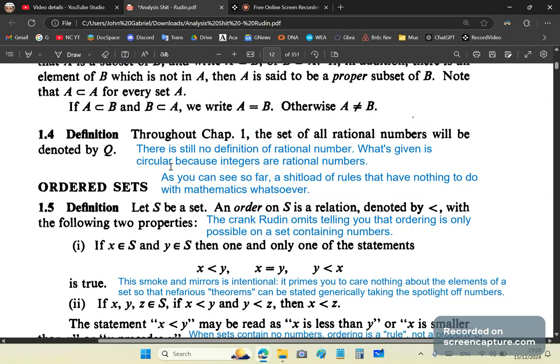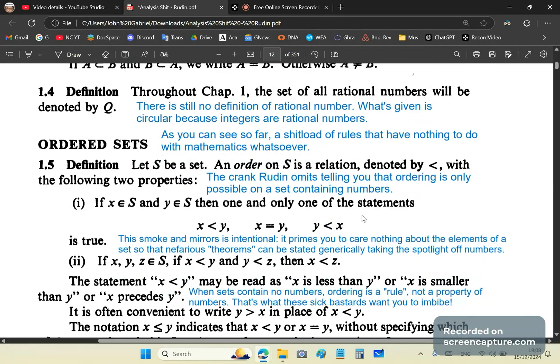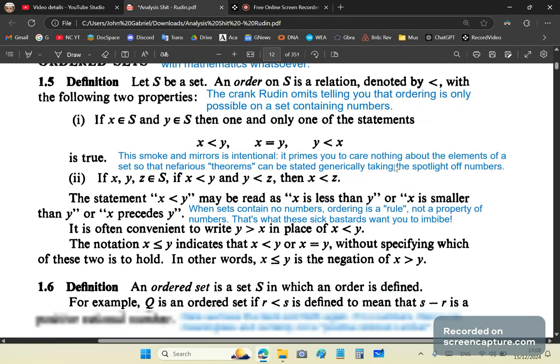So what's given is circular because, as I said, the integers are rational numbers. And so as you can see so far, we have a shitload of rules that have nothing to do with mathematics whatsoever. And then we come on to the next definition.